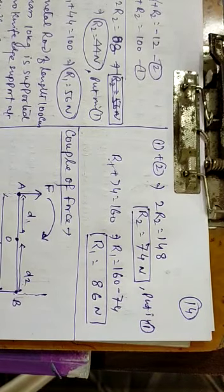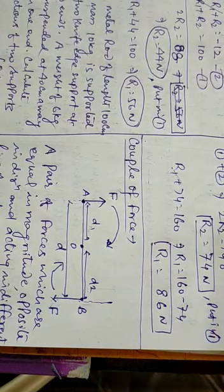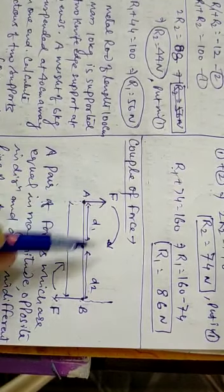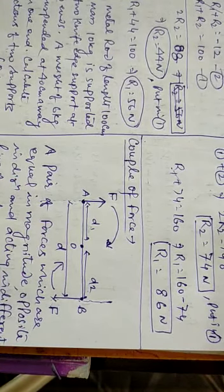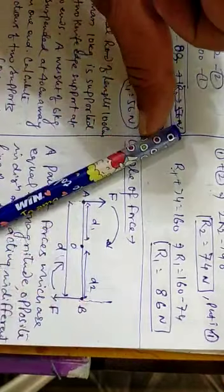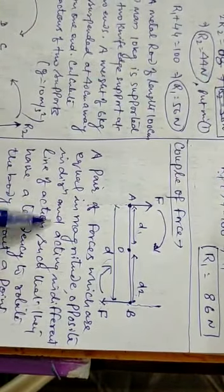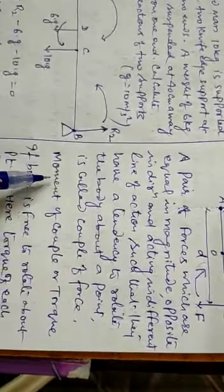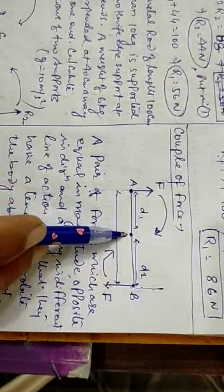Couple of forces — what does it mean? It seems that there are two forces on body AB. One force acts upward and one downward — they are opposite. They are equal in magnitude and act along different lines of action. A pair of forces which are equal in magnitude, opposite in direction, and acting in different lines of action such that they have a tendency to rotate the body — this is called a couple of forces.